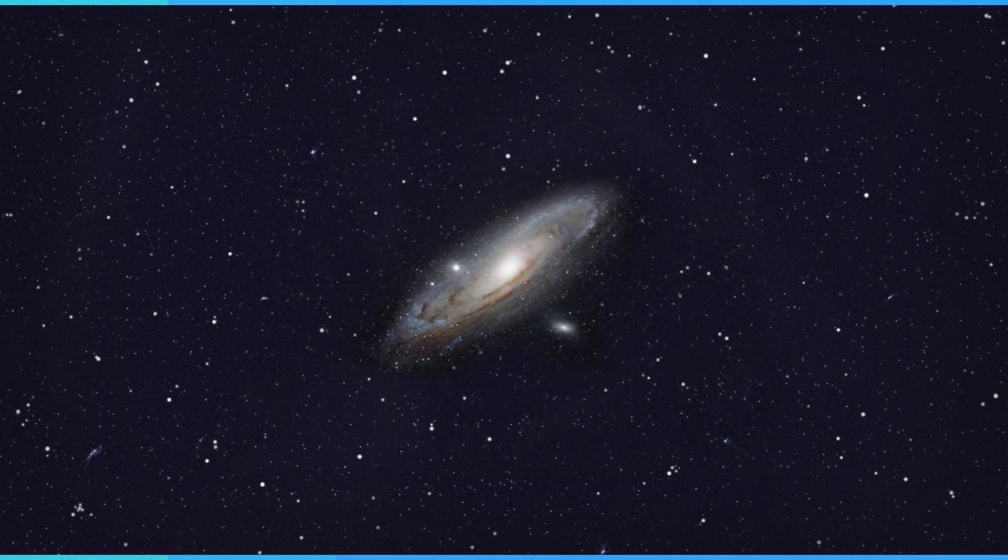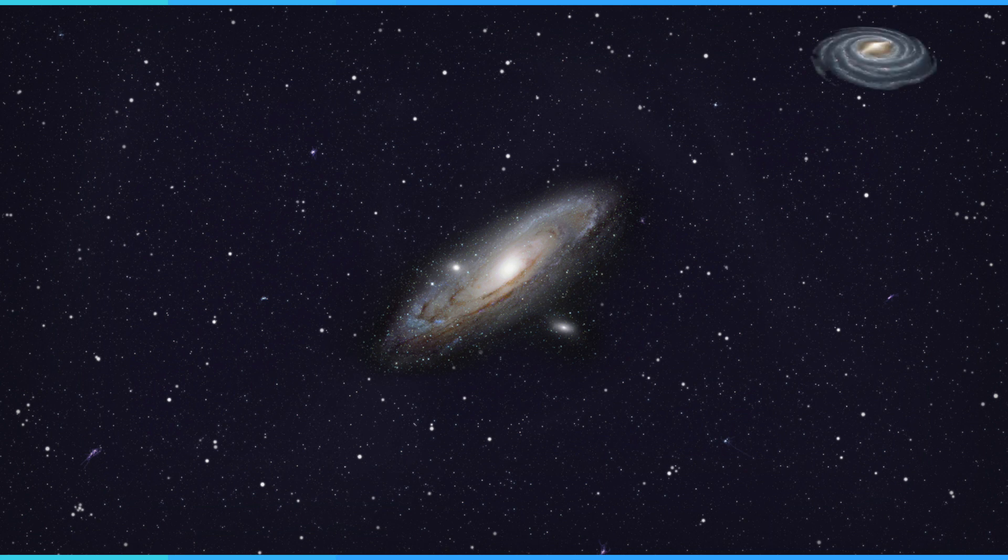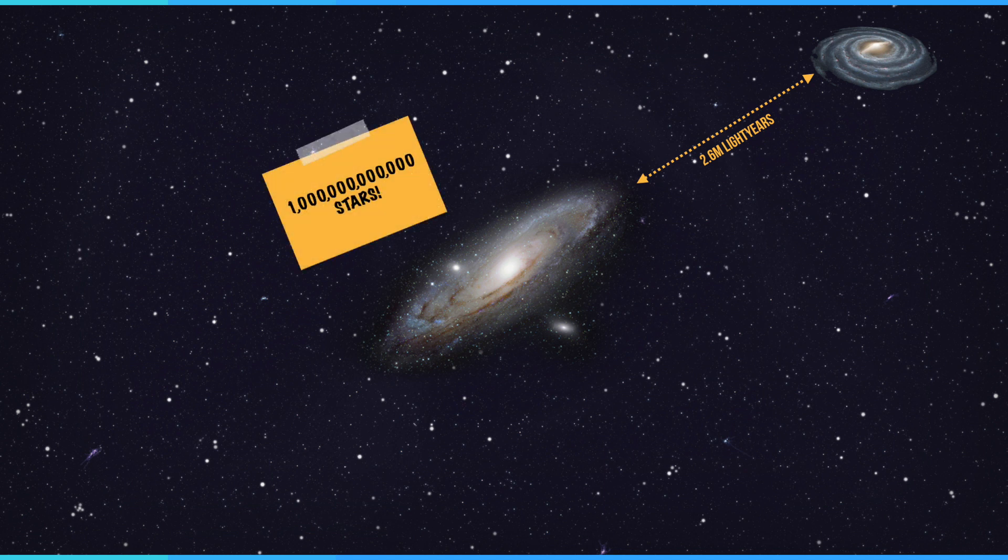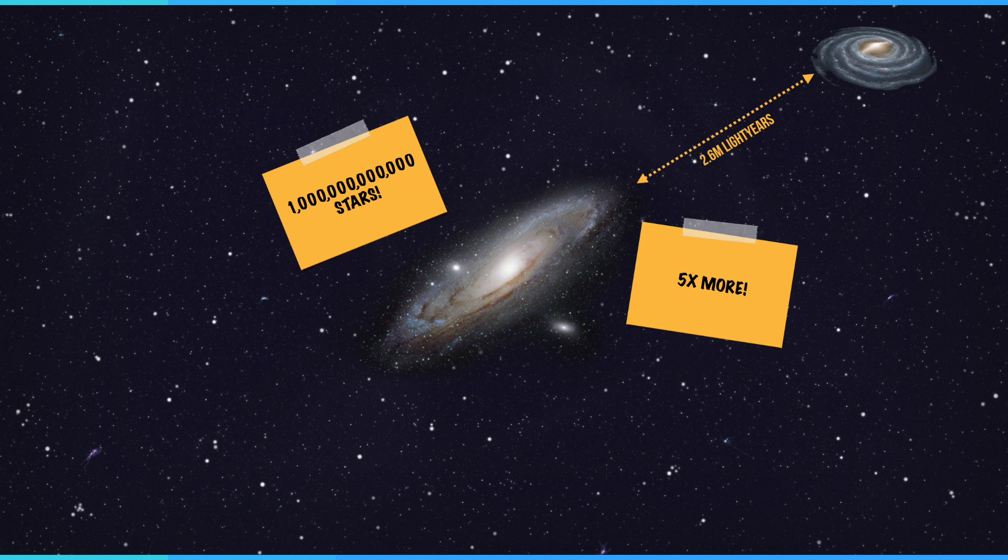The Andromeda galaxy, M31, is a spiral galaxy just like our very own Milky Way. It's 2.6 million light years away from us and contains around a trillion stars, about five times the number of our Milky Way, making it the largest member of the local group.